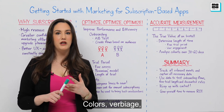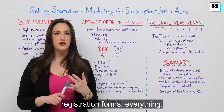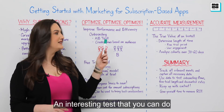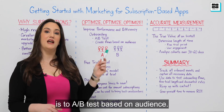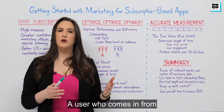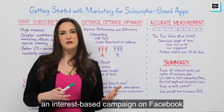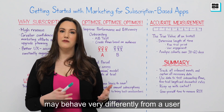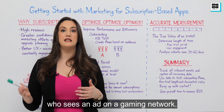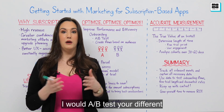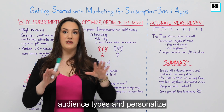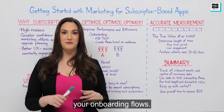Colors, verbiage, registration forms — everything. An interesting test you can do is A/B test based on audience. A user who comes in from an interest-based campaign on Facebook may behave very differently from a user who sees an ad on a gaming network. I would A/B test your different audience types and personalize your onboarding flows.